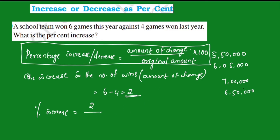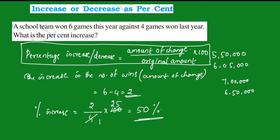The numerator is the amount of change, which is 2. The original amount is 4. So percentage increase equals 2 divided by 4 into 100. We cancel: 100 divided by 4 is 25. So 2 times 25 equals 50. The percentage increase is 50%.